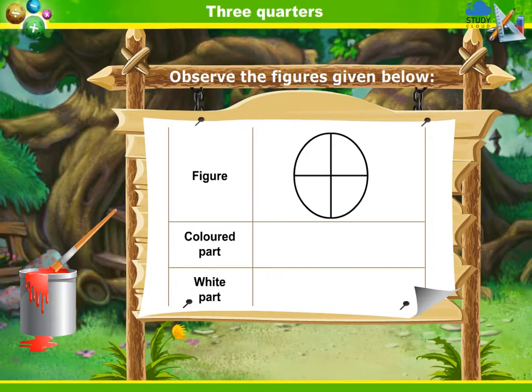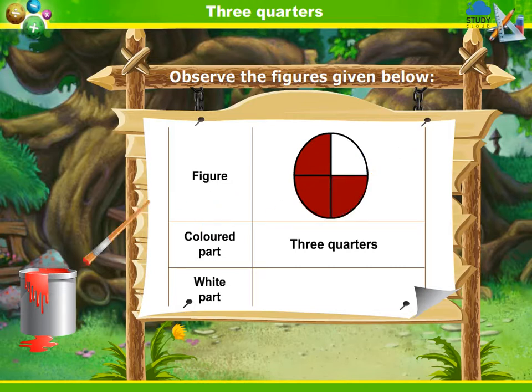The first figure is of a circle whose three-fourth part is coloured and one-fourth part is white.